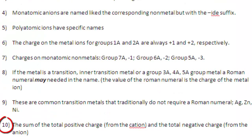And finally, the sum of the total positive charge from the cation and the total negative charge from the anion must sum up to zero.